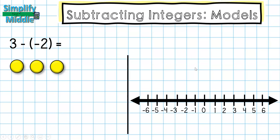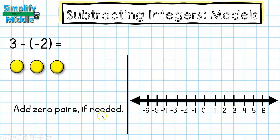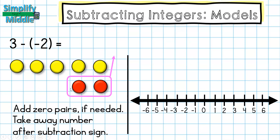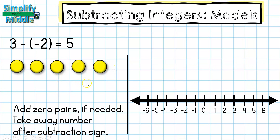Let's try another one. This time I have 3 positives and I would like to take away 2 red tiles. I don't have any red tiles, so I'm going to add zero pairs. Because I want to take away 2 red tiles, or negative 2, I'm going to add 2 zero pairs. The way this is written means 3 plus 0 plus 0, but now I have those 2 red tiles which I wanted to take away. So I'll box around them and take them away. What's left is 5 yellow tiles, so I end up with an answer of positive 5.